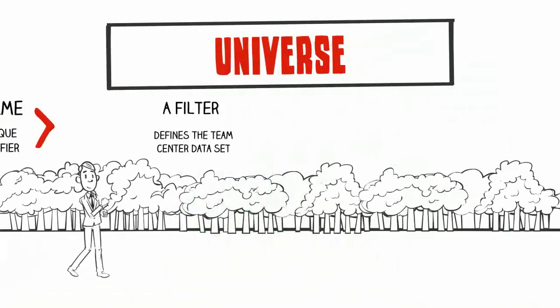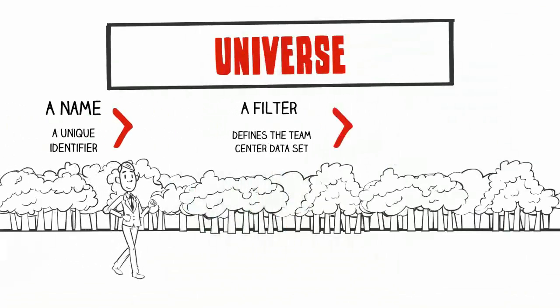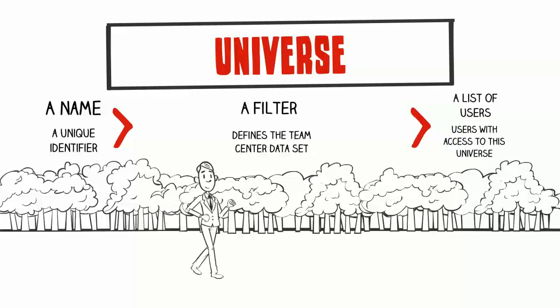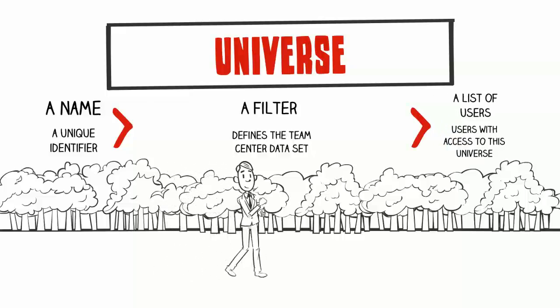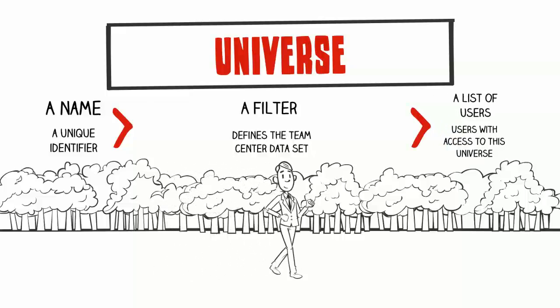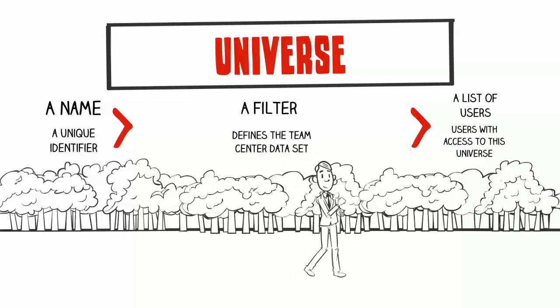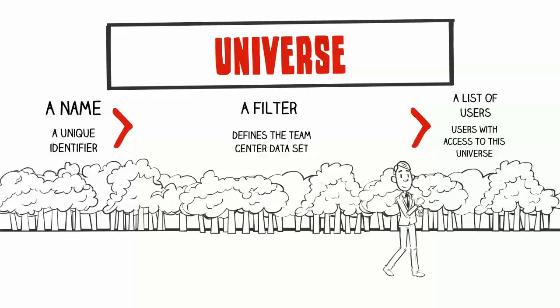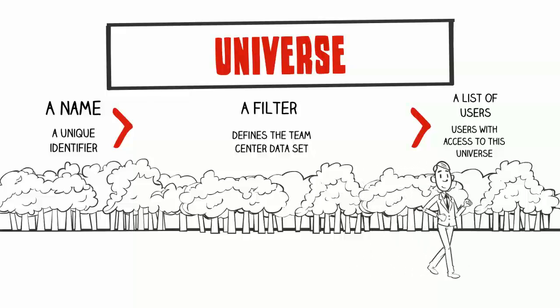A universe consists of a name, which would be the unique identifier, a filter that defines the Team Center data set, and a list of users. These are the users with access to this universe.